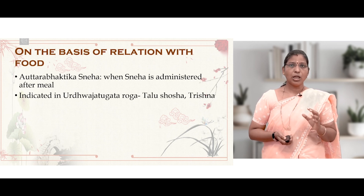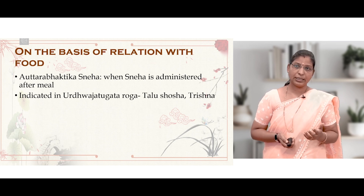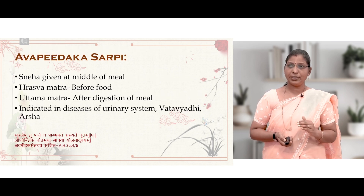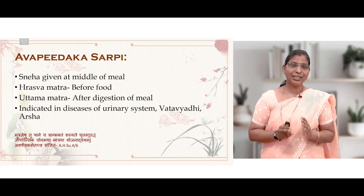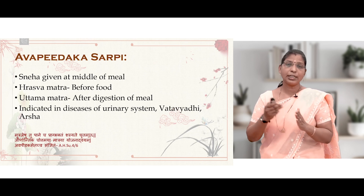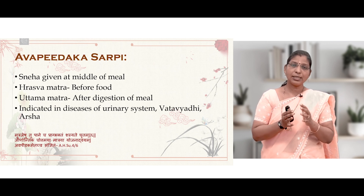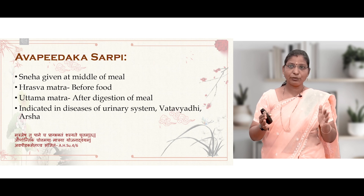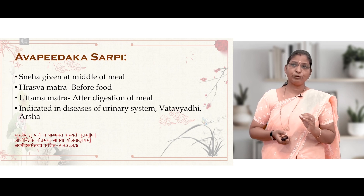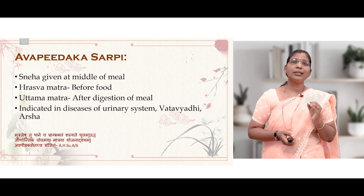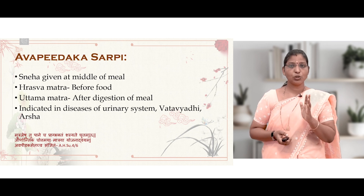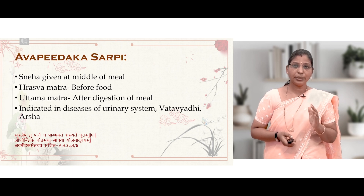On the basis of relation with food: Uttarbhaktika Sneha is administered after meal, indicated in Urdhvajatrugata roga like Shosha and Trishna. Avapida Sarapi is Sneha given in the middle of a meal — Raswa Matra given before food and Uttam Matra after digestion of the meal — indicated in diseases of the urinary system, Vatavyadhi, and Arsha, as described in Ashtangahridaya.